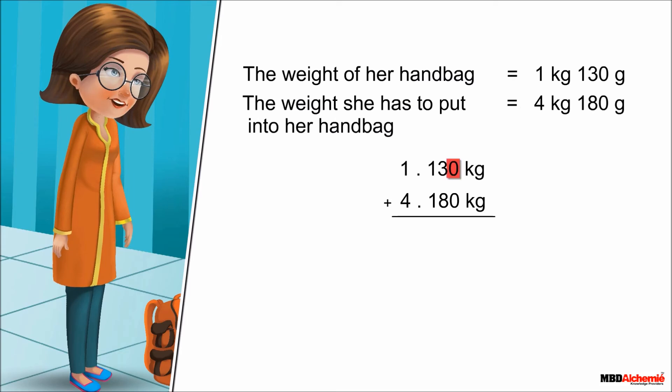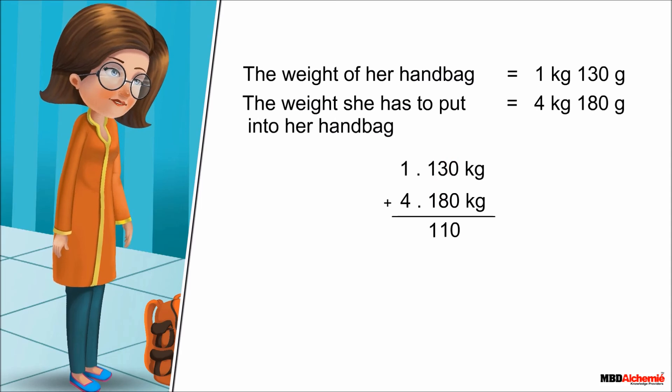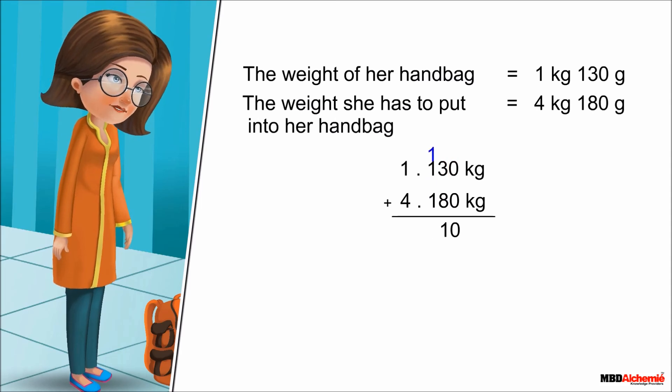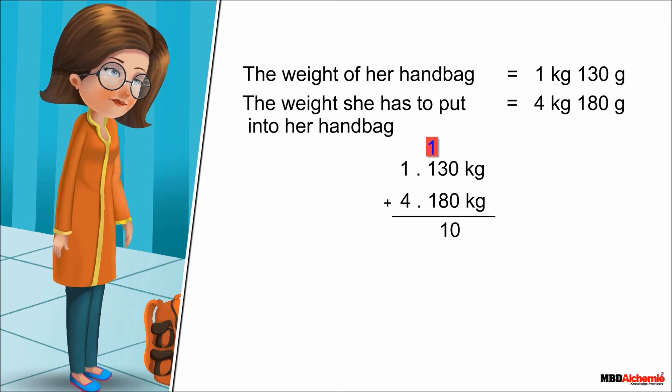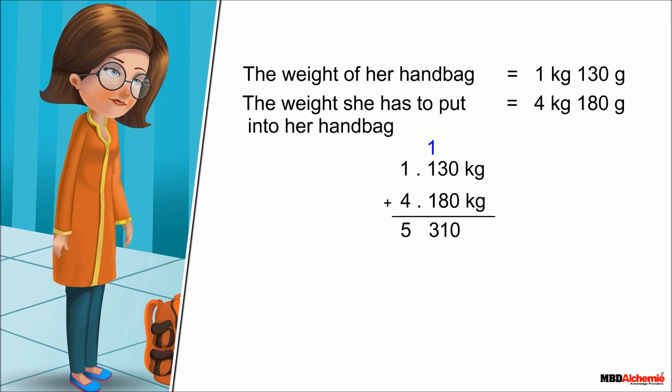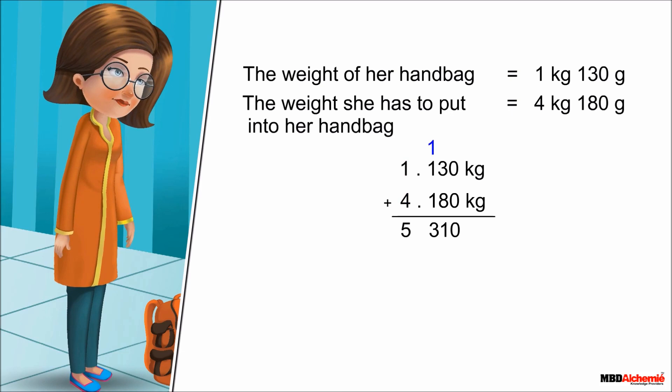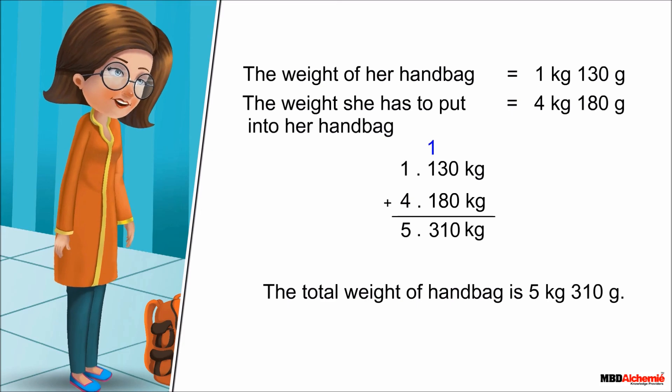So she calculates the total weight as 0 plus 0 is 0, 8 plus 3 is 11, and 1 will be carried over. And now, carried over 1 plus 1 plus 1 plus 1 is 3. And next, 4 plus 1 is 5. Now the total weight of handbag is 5.310 kilograms, or we can say it is 5 kilograms and 310 grams.